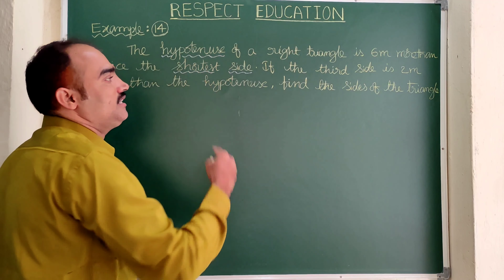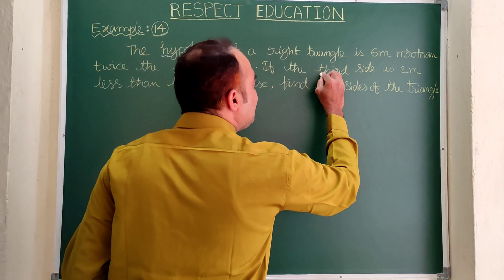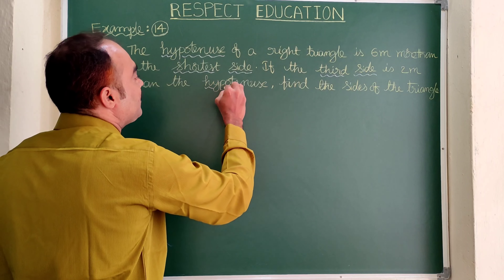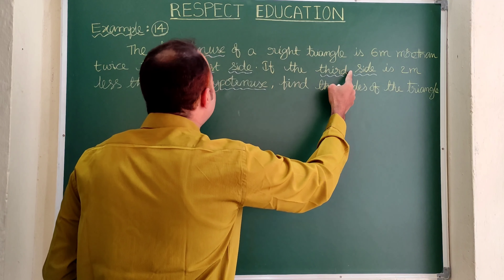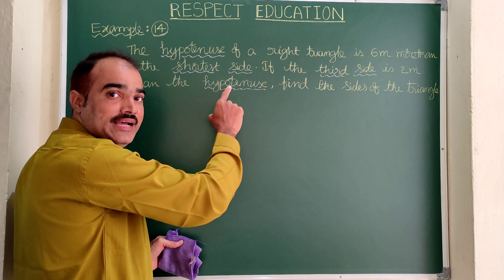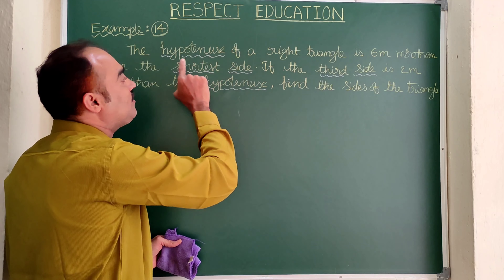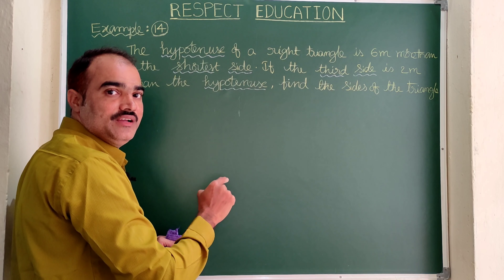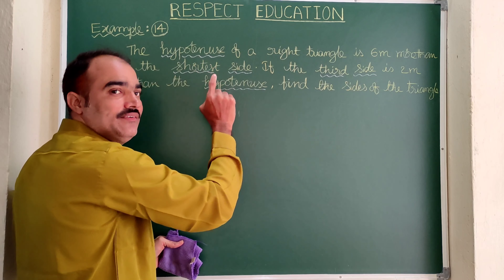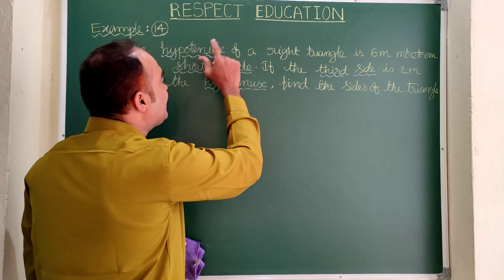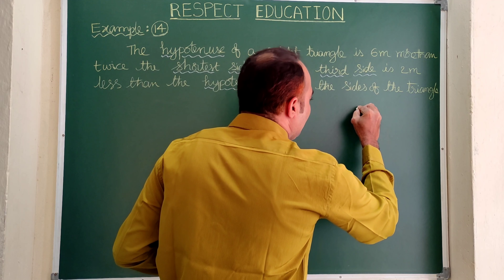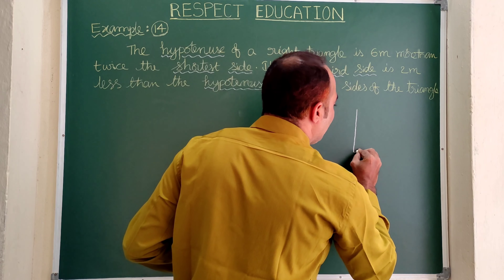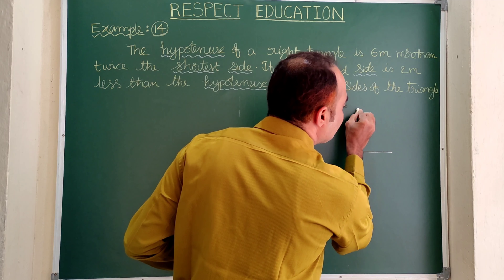Here we need to understand the question very carefully. The hypotenuse depends on the shortest side, and the third side depends on the hypotenuse. The third side is two meters less than the hypotenuse, whereas the hypotenuse is six meters more than twice the shortest side. So if we take the shortest side as X, we will be able to find all the values.